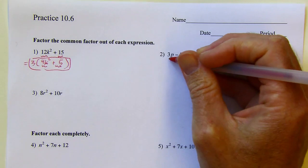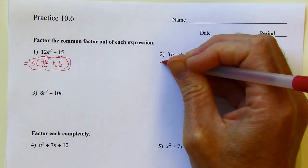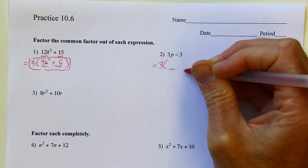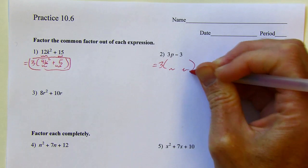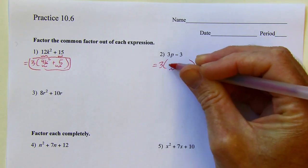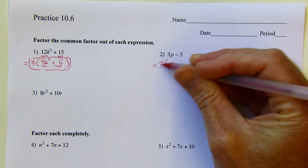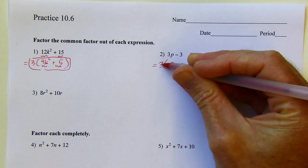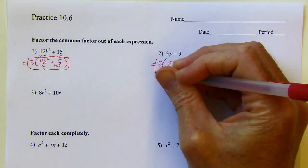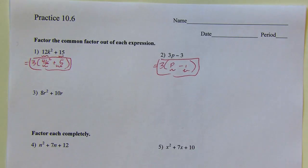Second problem — the only thing that goes into 3p and into negative 3 is 3. I'm thinking about what goes in these blanks. If I was distributing the 3 in, I'd have to multiply it by p to get 3p, and multiply 3 by negative 1 to get negative 3. So that gives me 3 times the quantity p minus 1.